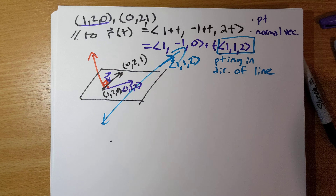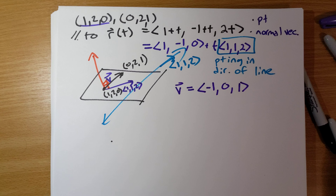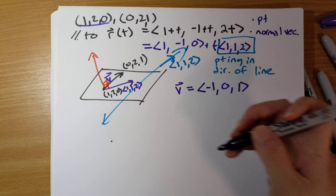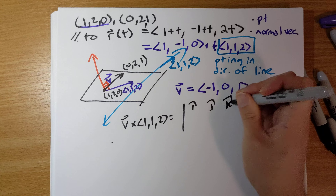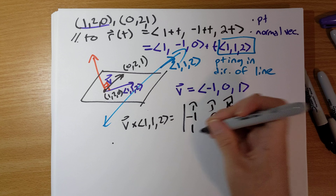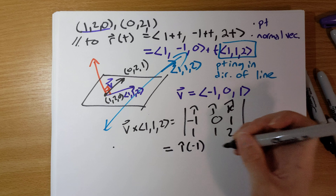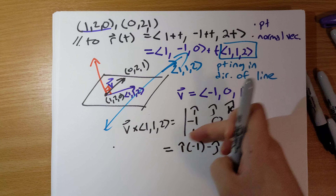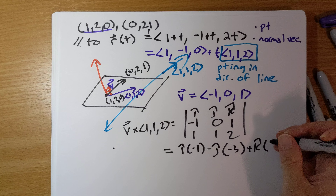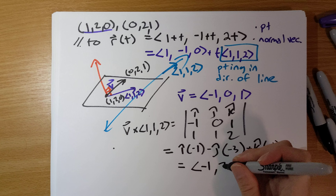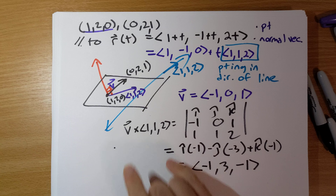Vector V from (1, 2, 0) to (0, 2, 1) is (-1, 0, 1). We compute V cross (1, 1, 2) using the i-hat, j-hat, k-hat determinant with rows (-1, 0, 1) and (1, 1, 2). This gives i-hat times (0 minus 1) minus j-hat times (-2 minus 1) plus k-hat times (-1 minus 0), resulting in the normal vector (-1, 3, -1). You can check that this is orthogonal to both (-1, 0, 1) and (1, 1, 2).